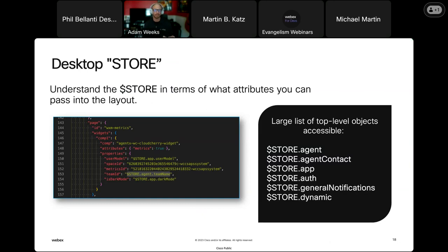There are a couple of different ways to configure widgets. You can have an iframe widget that basically embeds a view into your own web application. But today we're going a step further into web components. If you have a web component that's already prebuilt, it doesn't have to be built specifically for Contact Center — if it's available on a CDN, you can pull it in and embed it into your Contact Center agent desktop. Web components also have the ability to work with our SDK and the store variables that get you data from Contact Center. One important thing: dark mode support — when an agent switches to dark mode, it sends that information to the widget so it can style itself accordingly.